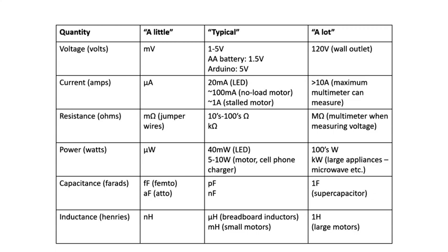Hopefully this is useful. When you're doing things in lab — taking measurements or doing calculations — odds are you're going to be looking at things in that middle column. If you're getting values that are really off on the extremes in the right or left columns, odds are you're interpreting your measurement wrong, or you're off by a decimal place or a factor of 10 in one of your calculations.